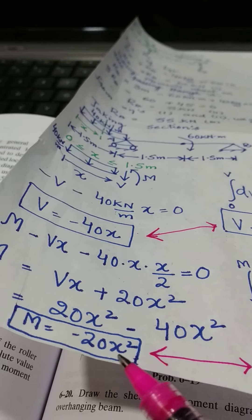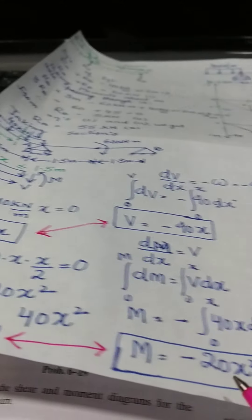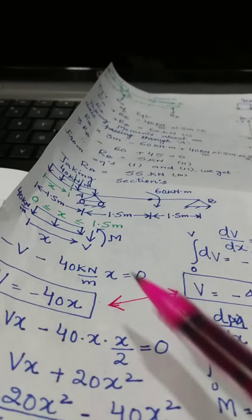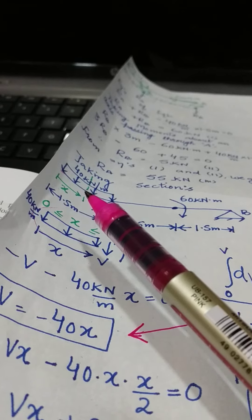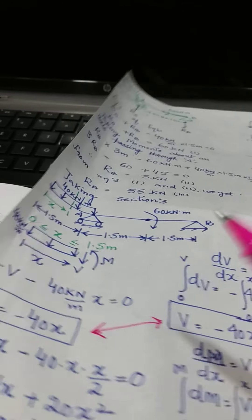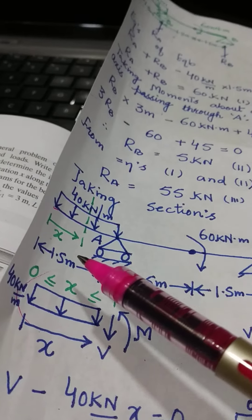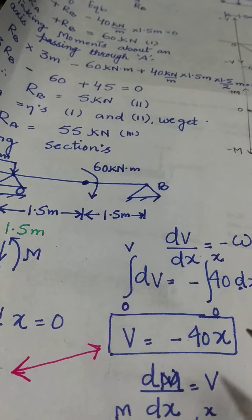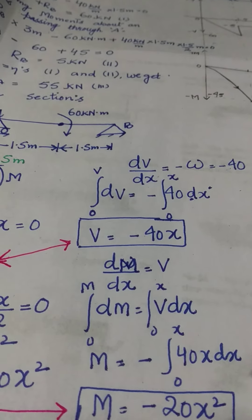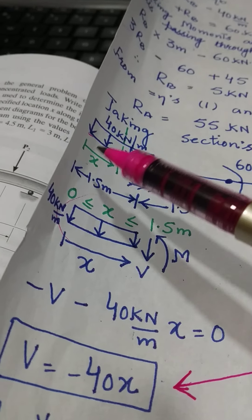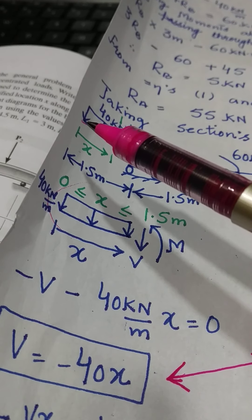This result is the same as what we obtained using the equations of equilibrium. So in the span of the beam from x equals 0 to x equals 1.5, the shear force is V equals minus 40x, and the bending moment is M equals minus 20x squared.